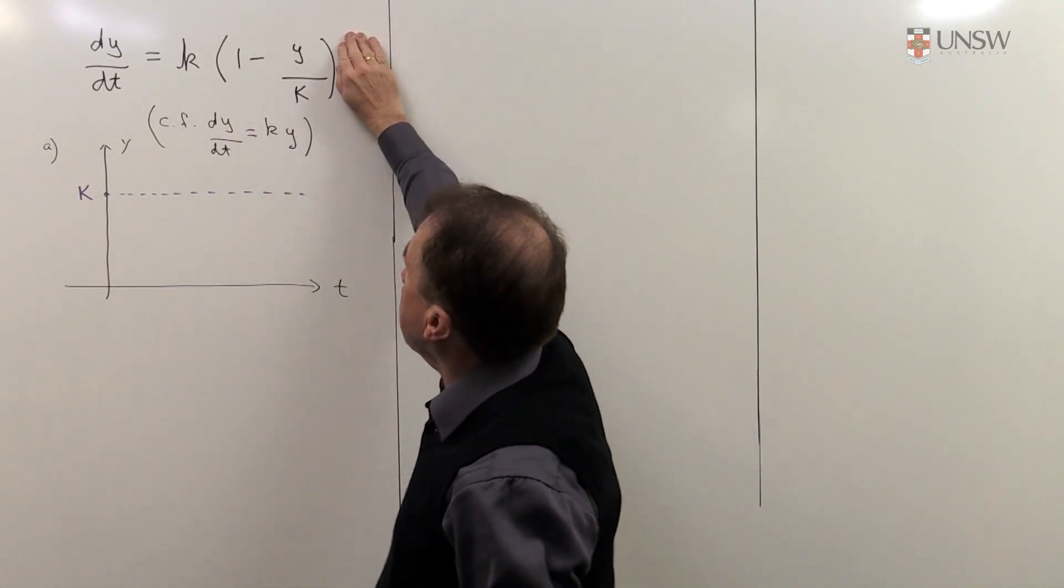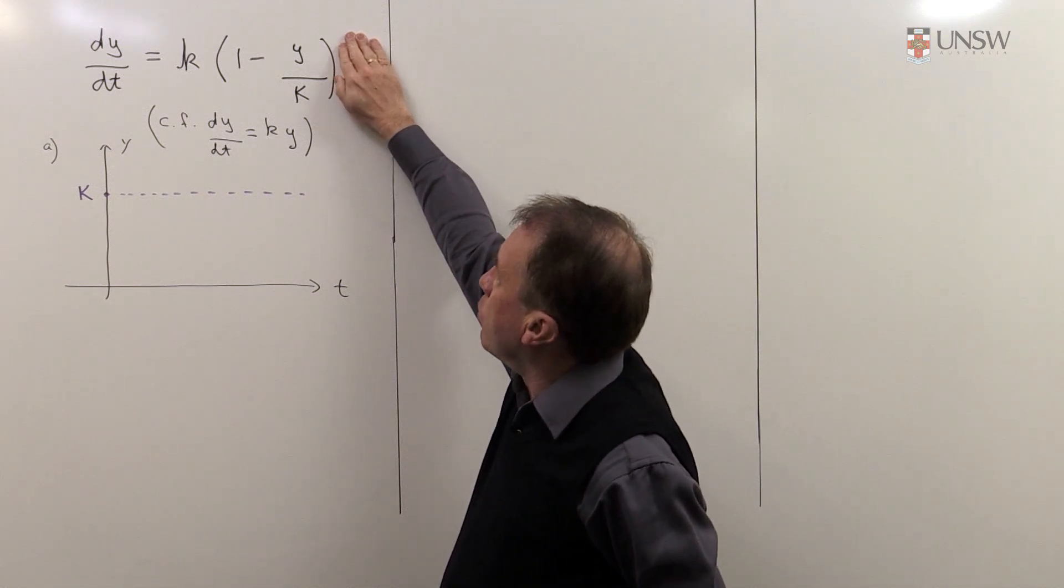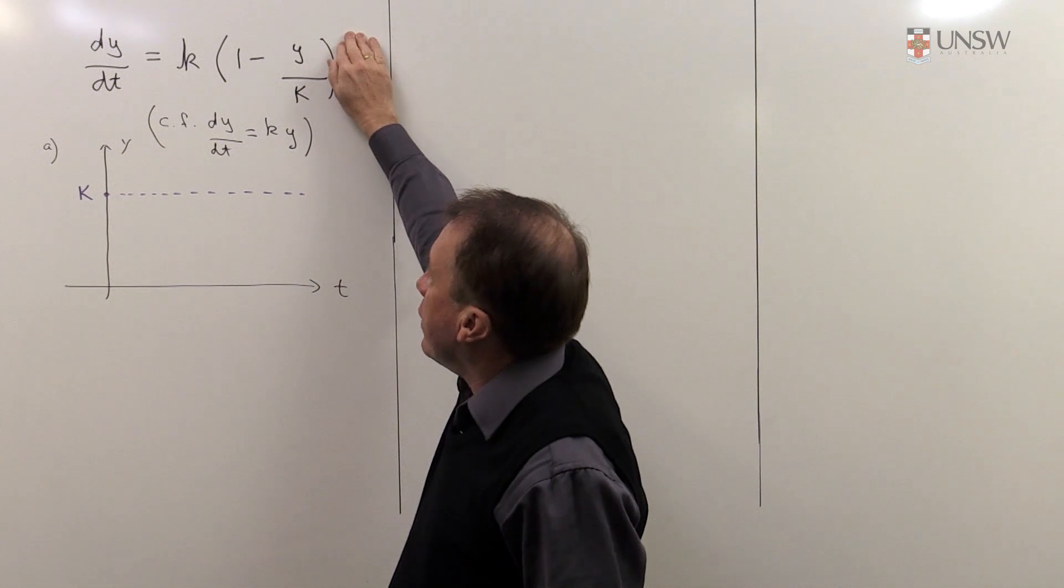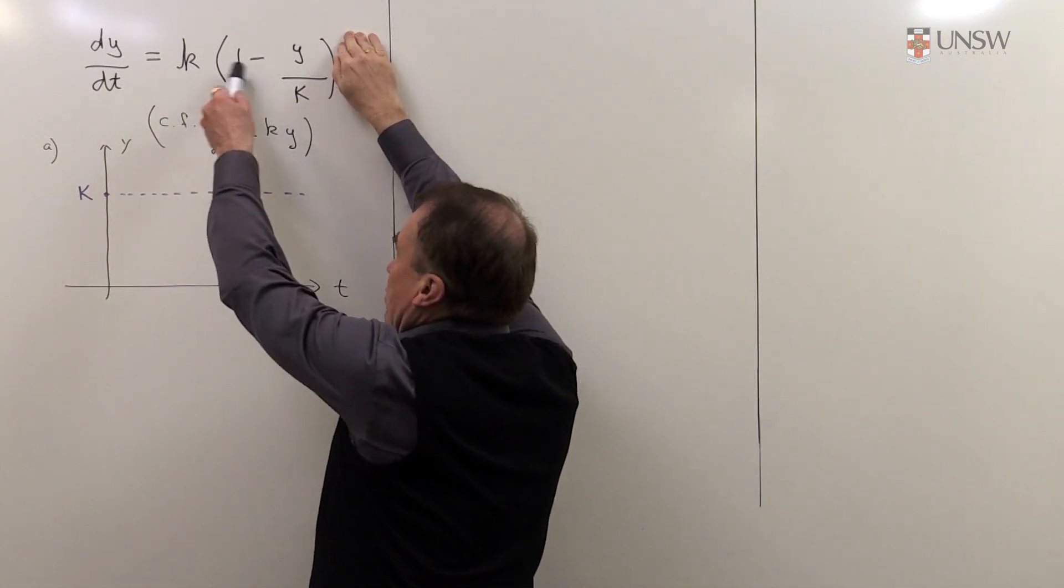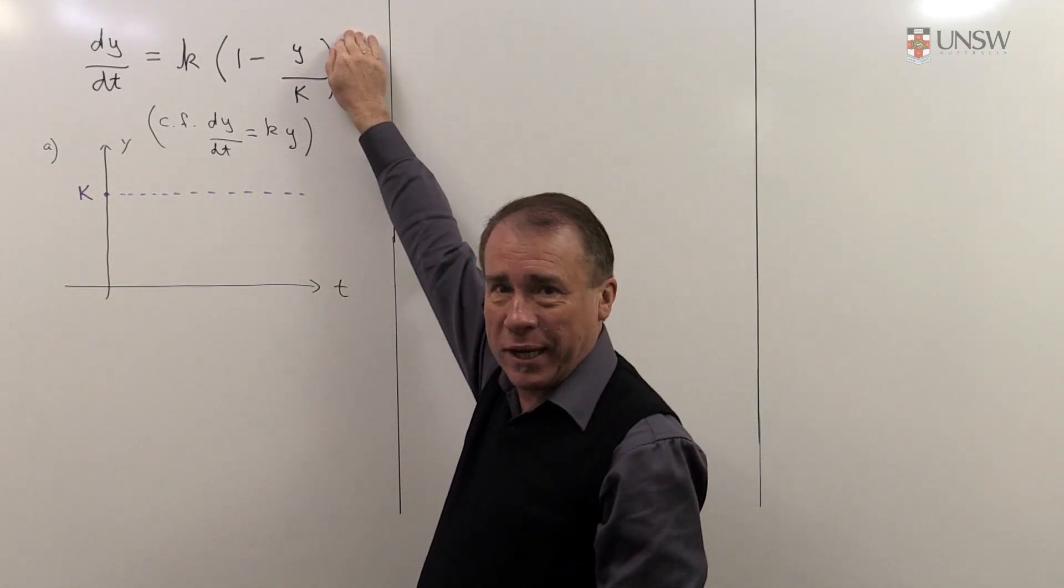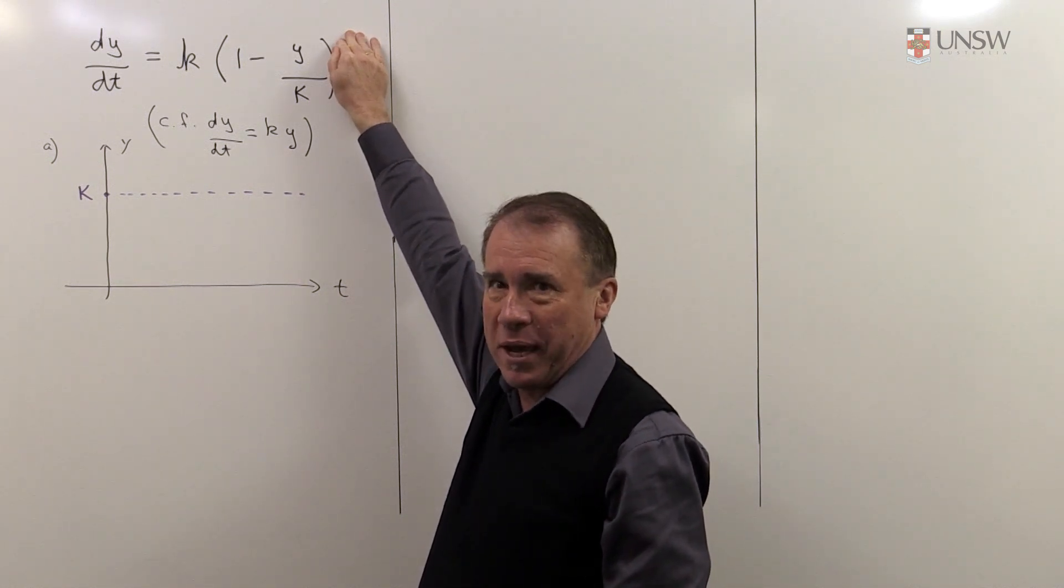So you might think, well, there's a good way of modelling, but the problem with this one without the y on the end is that if y is zero, that is, if there's no population at all, then the rate of increase of the population is still non-negative, and so the population increases even though there's nobody actually there.